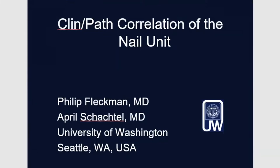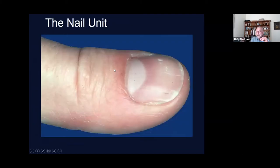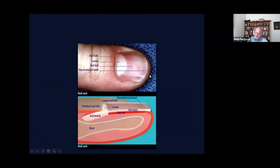Let's talk about anatomy. This is the nail unit — it makes the nail plate. It consists of the nail folds, the matrix which extends under the proximal nail fold, the nail bed, and the hyponychium, which seals the free edge of the nail plate.